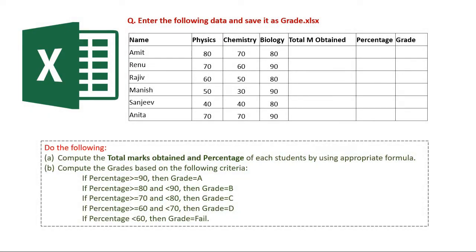Welcome to this tutorial. Today we're going to solve another DCA practical question based on Excel. Here is the question: enter the following data and save it as grade.xlsx. A list of names and corresponding marks obtained by students is given, and we're going to calculate the total marks obtained by each student in three subjects, and also find the percentage and grade based on their total marks.